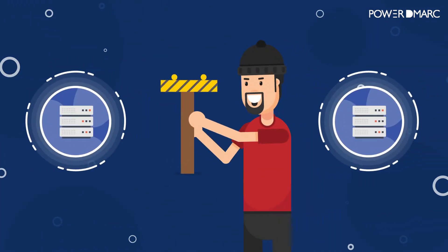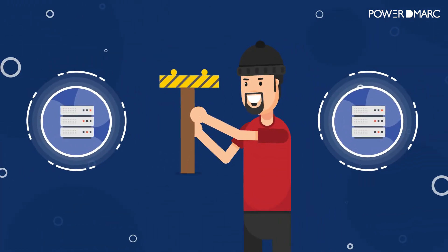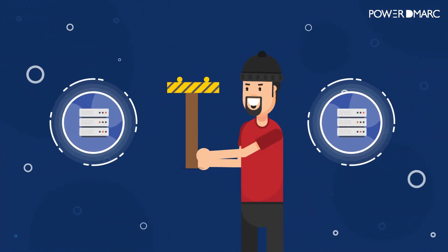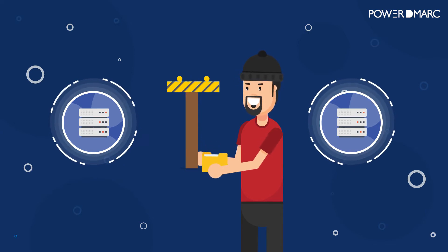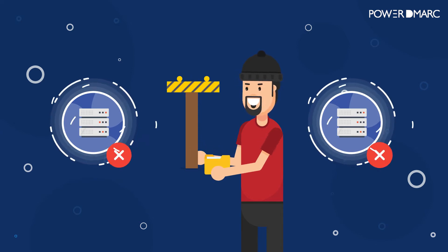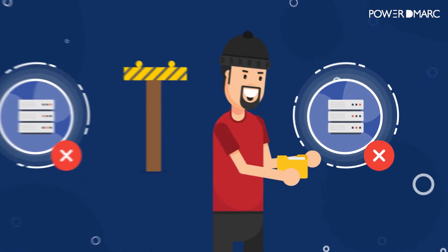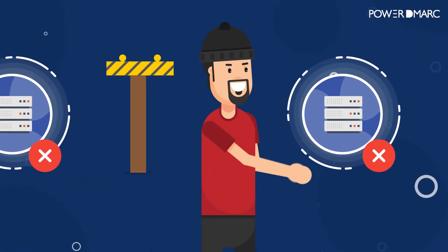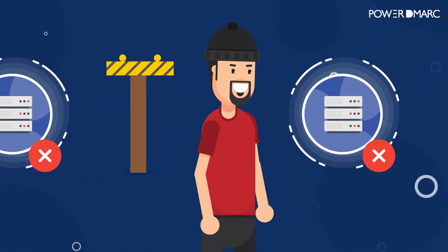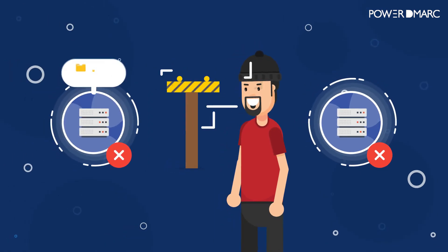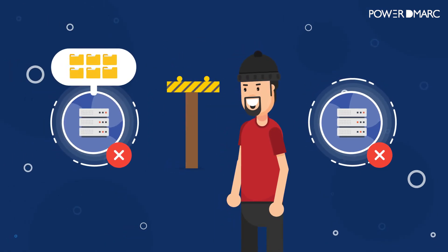But what happens when an attacker tries to interfere? If a third party decides to block your server when it's checking for TLS, your server thinks the receiver doesn't support TLS. It goes ahead and sends the email anyway, but without encrypting it.